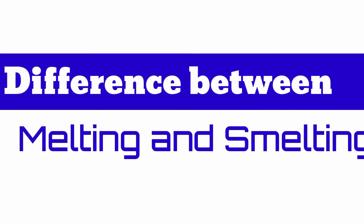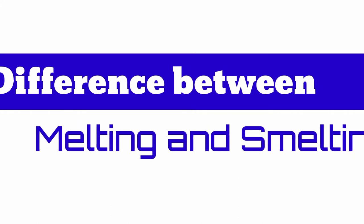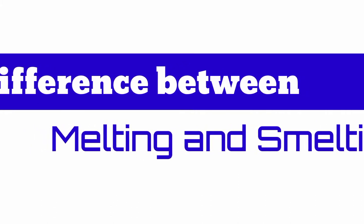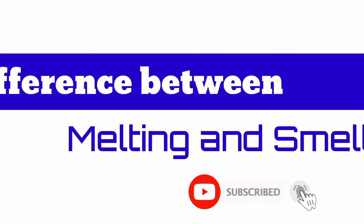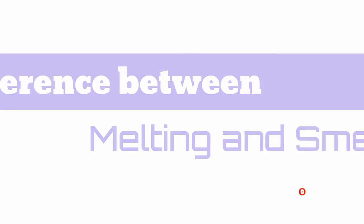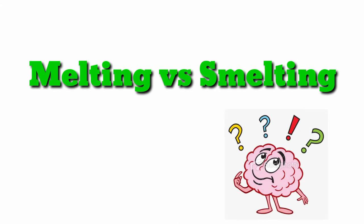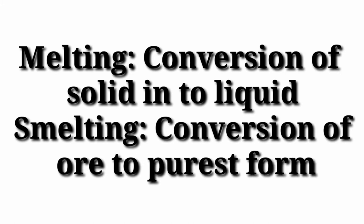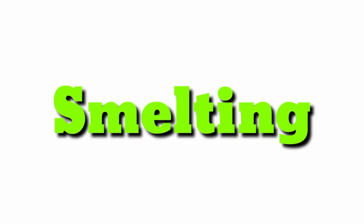Today we are going to discuss the difference between melting and smelting. Although the two terms sound similar, they are different terms with different applications. Both processes involve heating a substance to a higher temperature. The main difference is that melting converts a solid substance into a liquid, whereas smelting converts an ore to its purest form.